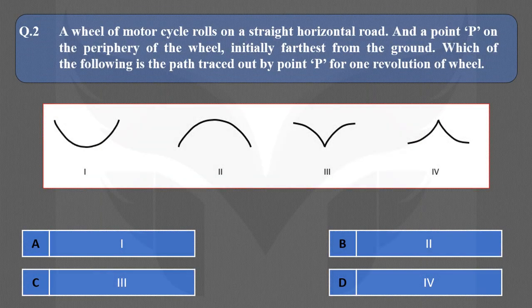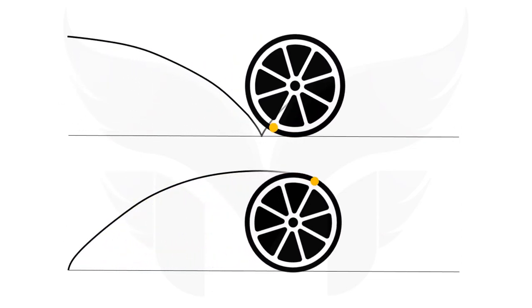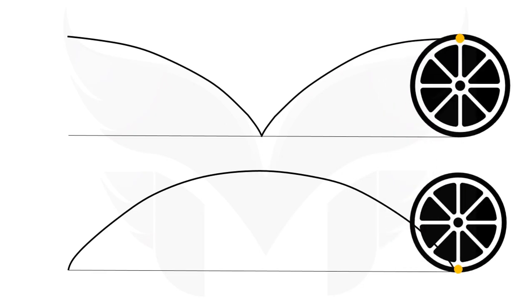Next question: A wheel of a motorcycle rolls on a straight horizontal road and a point P on the periphery of the wheel is initially farthest from the ground. Which of the following is the path traced out by point P for one revolution of the wheel? Here we have two wheels — the top wheel has a point on its circumference farthest from the ground, and the bottom wheel has a point on the ground. The paths are different for both situations, but both curves are called Cycloid.